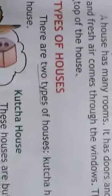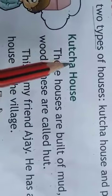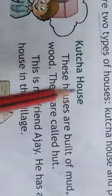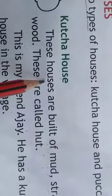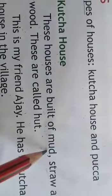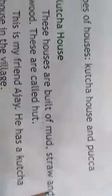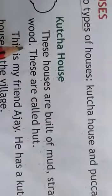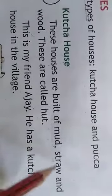There are two types of houses — Pakka House and Kaccha House. Now we will read about the Kaccha House. These houses are built of mud, straw and wood.